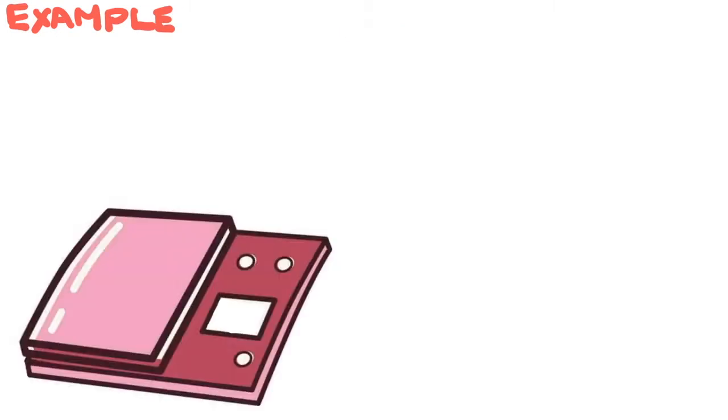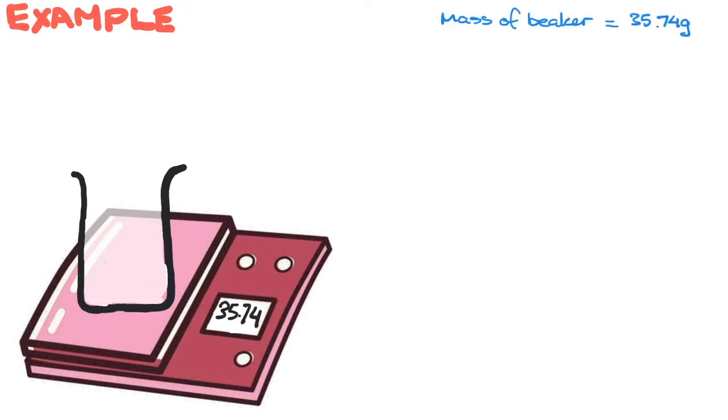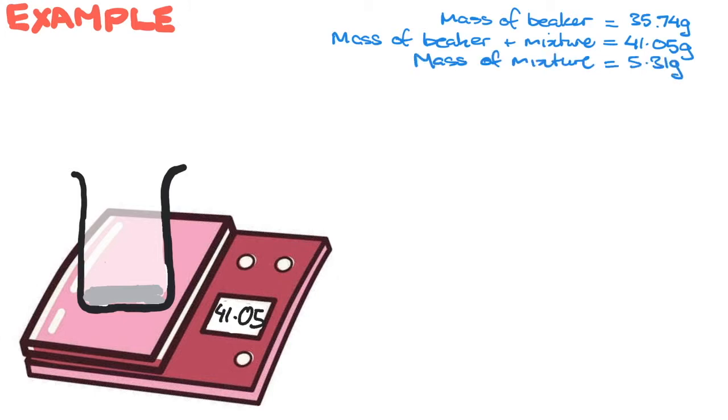The first thing to do is obtain a small sample of the mixture. This can be achieved by first weighing a dry empty container such as a beaker, let's say it's 35.74 grams, and then adding your sample to the beaker and weighing it. So the beaker plus the mixture equals, say, 41.05 grams. The difference is the mass of your sample, so therefore our mass of mixture is 5.31 grams.